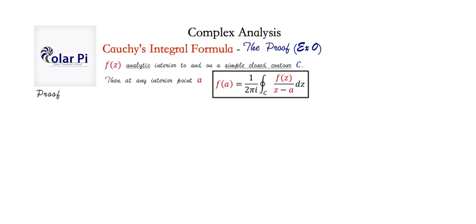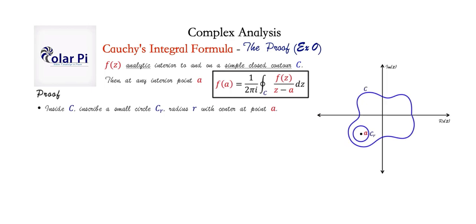No surprise, we're going to heavily rely on the idea of the crosscut, which played a vital role in all four videos on Cauchy's theorem. I first introduced it when I showed how to do the integral of 1 over z. What we're going to do is take the contour c and inside it form a small circle called c sub r of radius r centered at the point a, and then apply Cauchy's theorem. We have c, the given contour, and then centered at a is a small circle inside c, which we're calling c sub r.